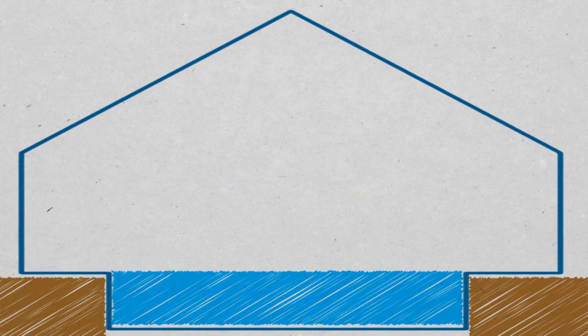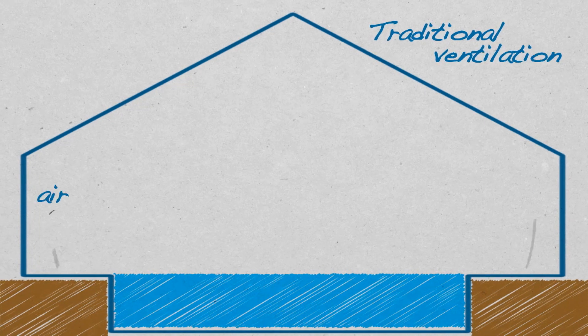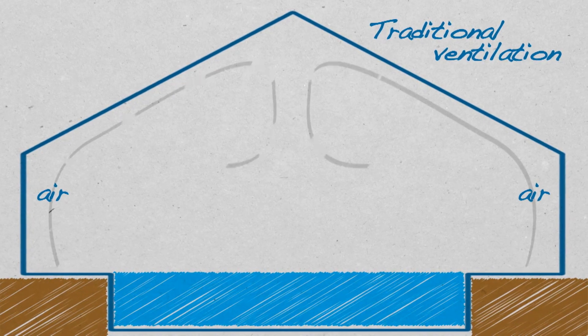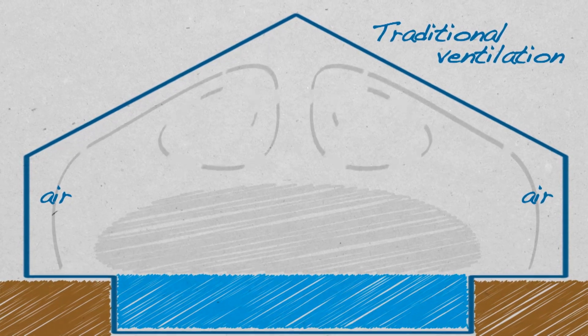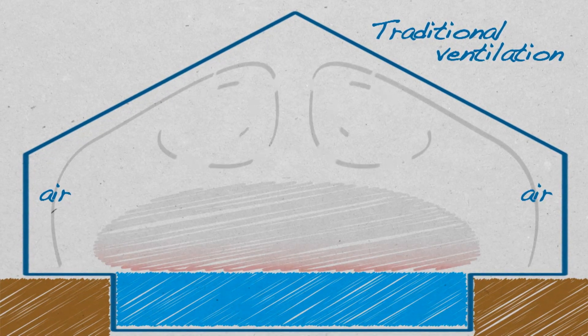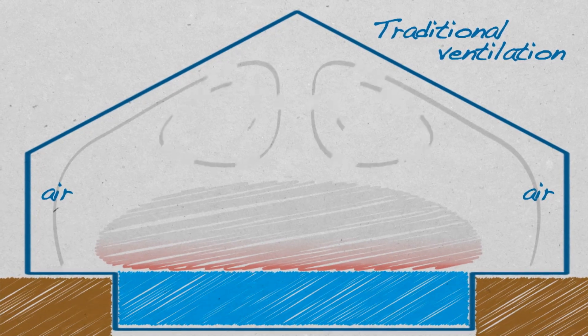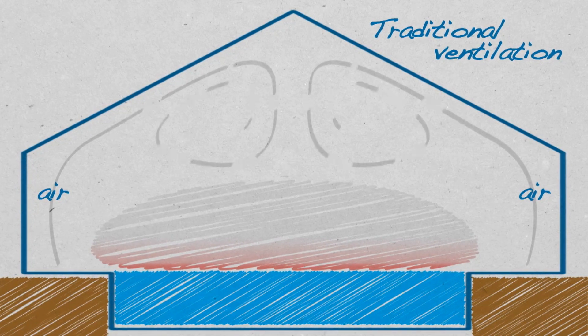The third step in the InBlue process is ventilation. Even though our technology is very effective, we can't avoid the formation of some chlorine byproducts. These byproducts are heavy, concentrated on the water surface, exactly where our noses are during swimming. So InBlue rethought the way ventilation is done.